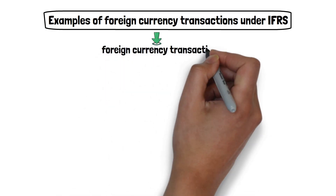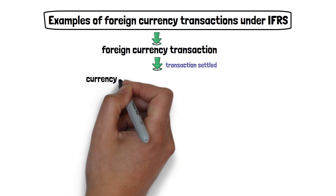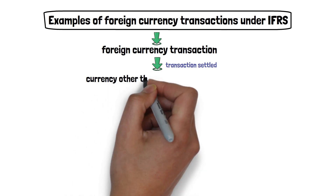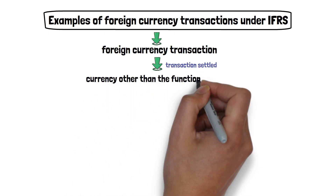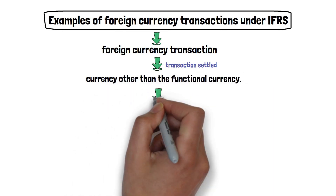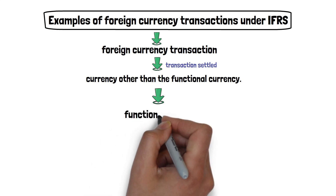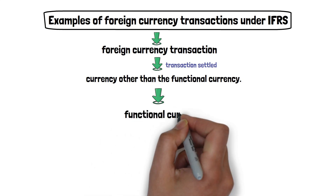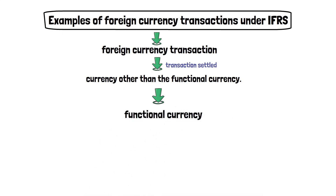A foreign currency transaction is a transaction settled in a currency other than the functional currency. Remember that the functional currency is the currency of the primary economic environment in which an entity operates.